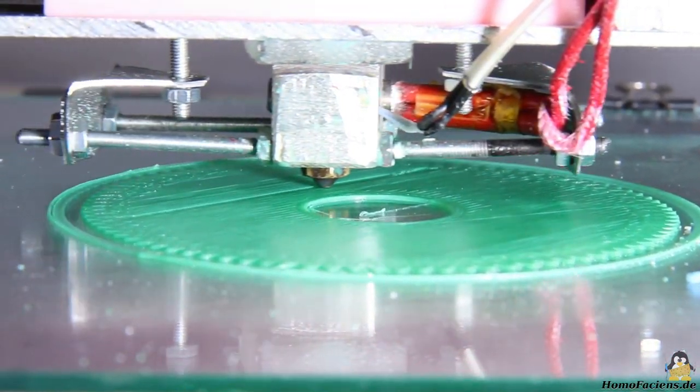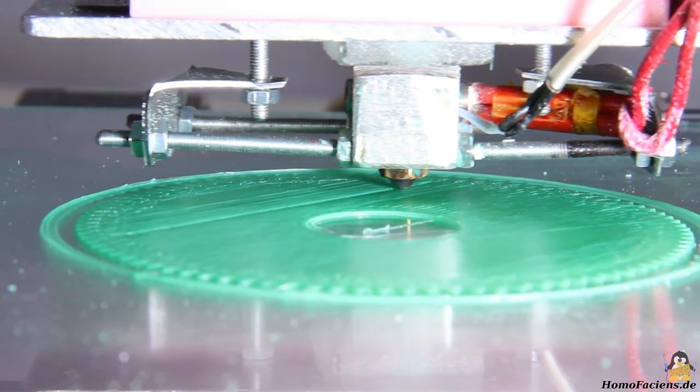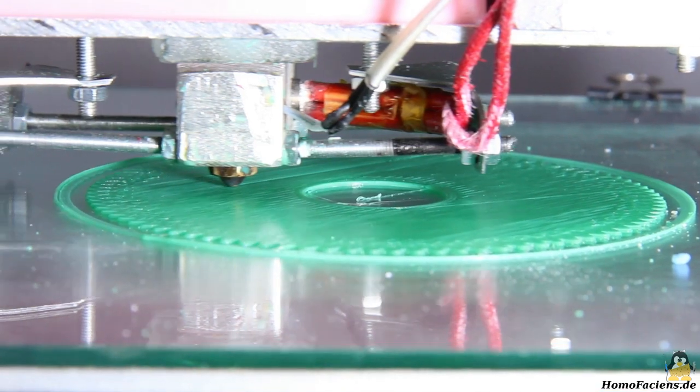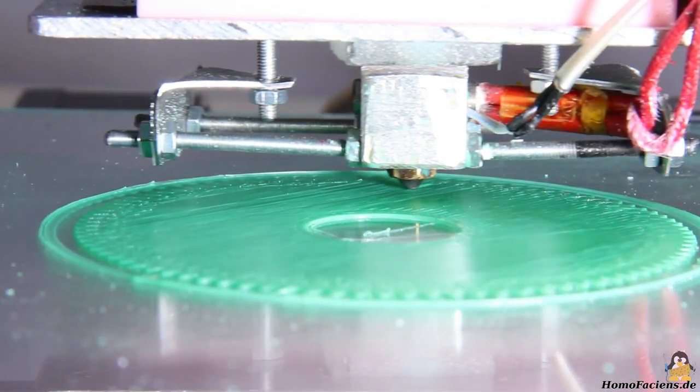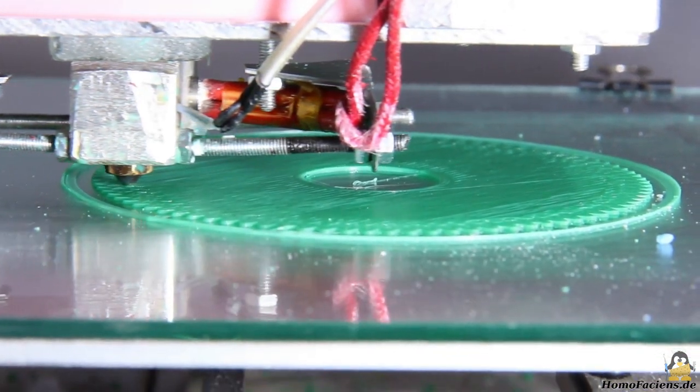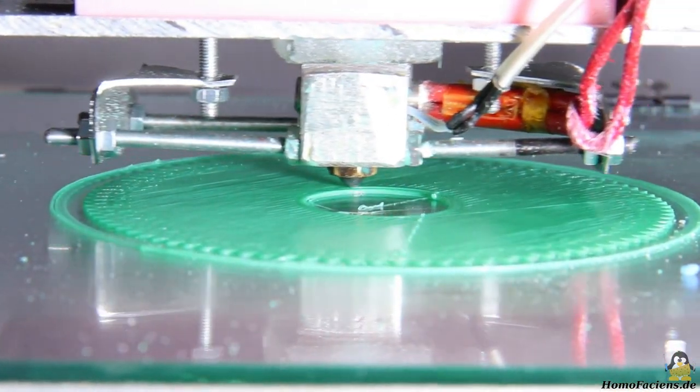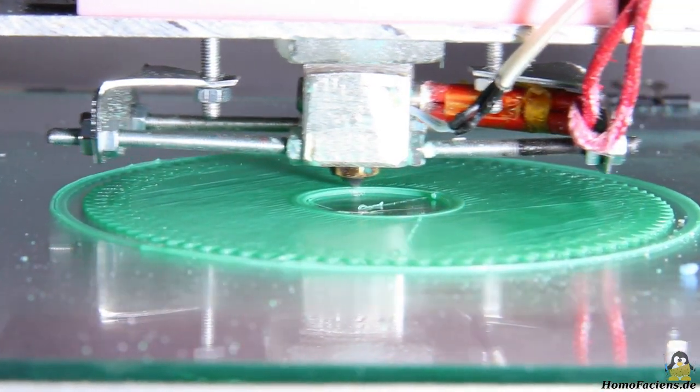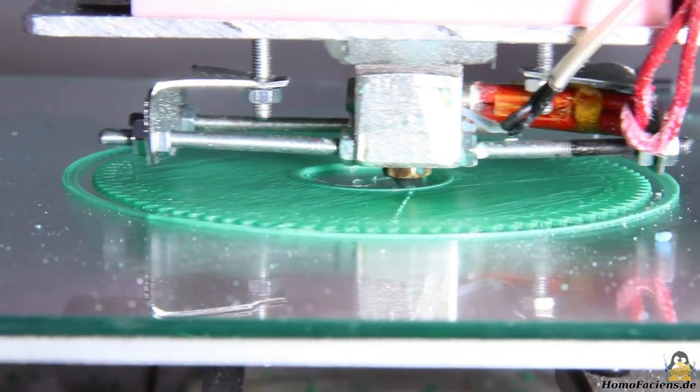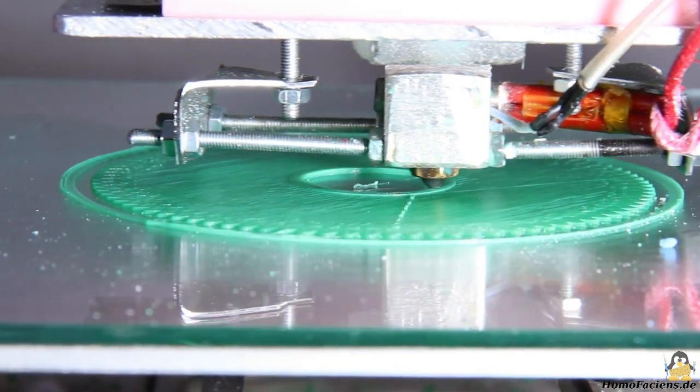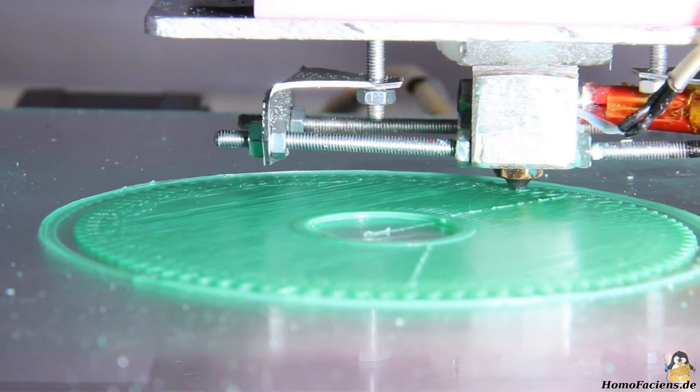For the first real replacement part that I print here, the speed is set to 30mm per second. The previous video showed that both the extruder and the printer deliver good results at this speed. I actually wanted to test different nozzle diameters in this video, but prototypes always have a life of their own. So for now I stayed with the 1mm nozzle for the spare part I needed.